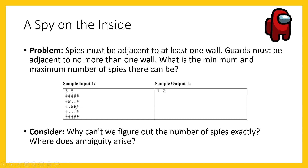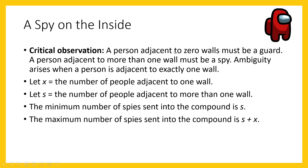The person on the right is adjacent to exactly one wall on the right. Since spies must be adjacent to at least one wall and guards must be adjacent to no more than one wall, we don't know for certain whether this person is a spy or guard. That's the crux of the solution: a person adjacent to zero walls must be a guard, a person adjacent to more than one wall must be a spy, and a person adjacent to exactly one wall is ambiguous.